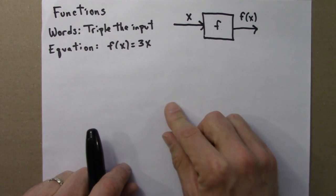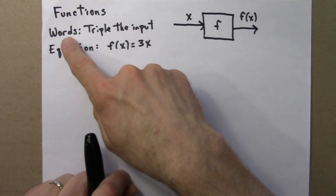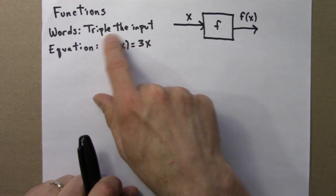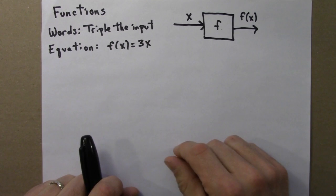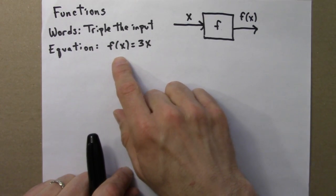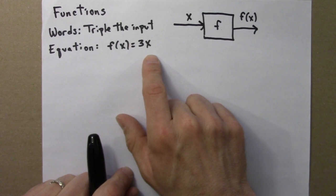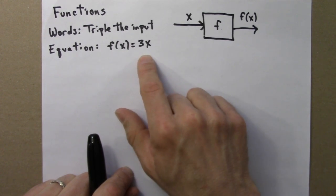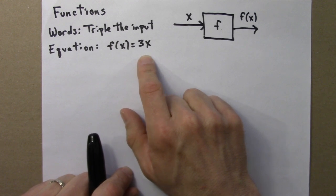the tripling function, we could describe that in words: take the input and triple it. That describes what the function does. And equivalently, we can describe the function with an equation. So here it is, f(x) = 3x. This says whatever the input is, multiply it by 3, and that's your output.